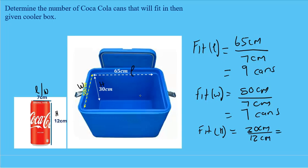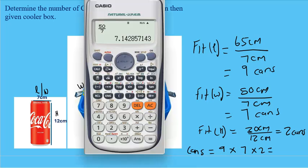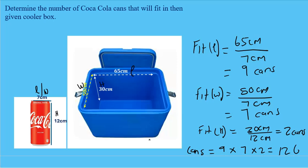2.5 rounds down to two cans. So the total number of cans that fit in this cooler box is nine cans in length, times seven cans in width, times two cans in height: 9 × 7 × 2 = 126. The total number of cans that will fit in this cooler box is 126.